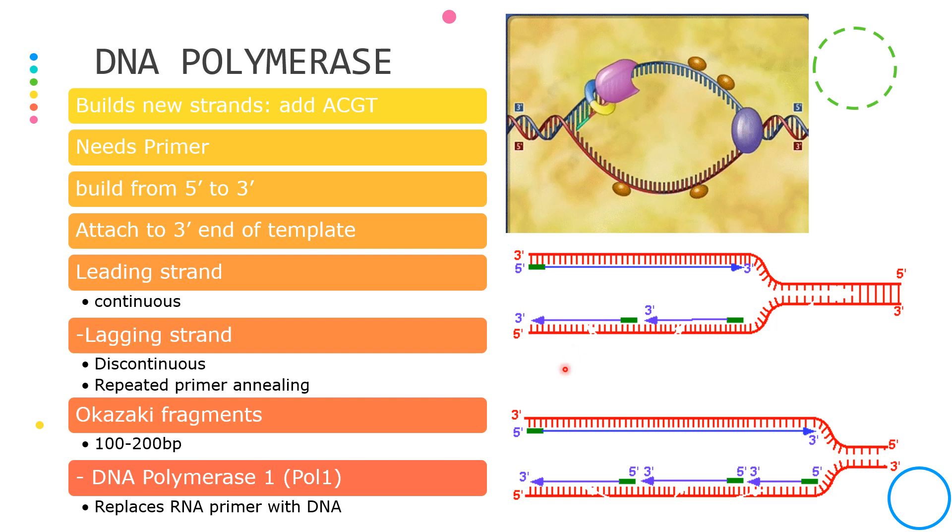This makes it a very tedious and repeated process. The primers are always placed for DNA polymerase to build. This also creates fragments called the Okazaki fragments, which are made up of 100 to 200 base pairs.